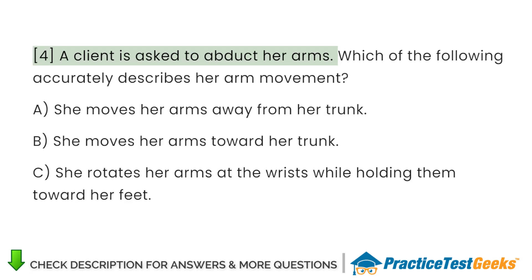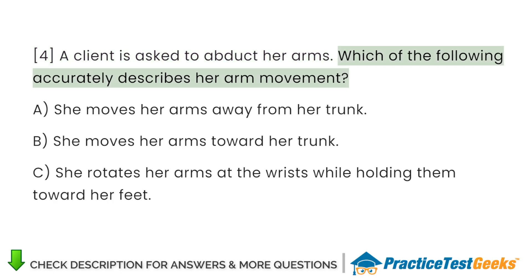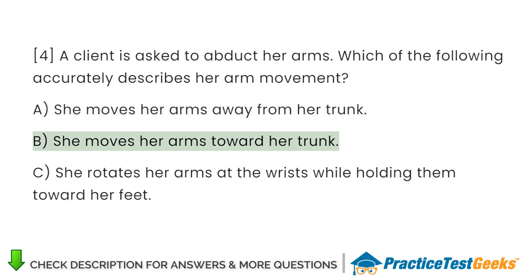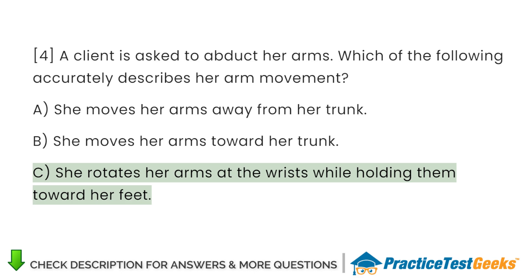A client is asked to abduct her arms. Which of the following accurately describes her arm movement? A. She moves her arms away from her trunk. B. She moves her arms toward her trunk. C. She rotates her arms at the wrists while holding them toward her feet.